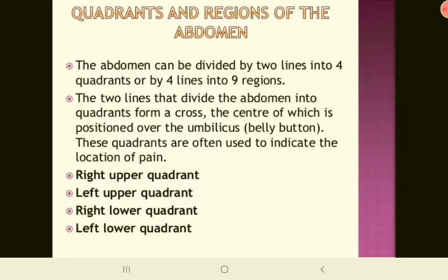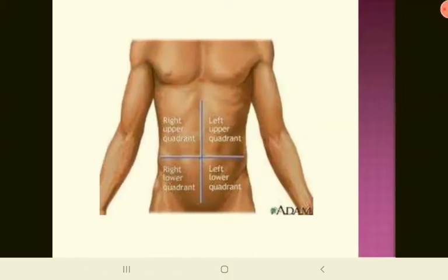The abdomen can be divided by two lines into four quadrants, or by four lines into nine regions. The two lines that divide the abdomen into quadrants cross at the center, positioned over the umbilicus — the belly button. These quadrants are often used to indicate the location of pain: right upper quadrant, left upper quadrant, right lower quadrant, and left lower quadrant.